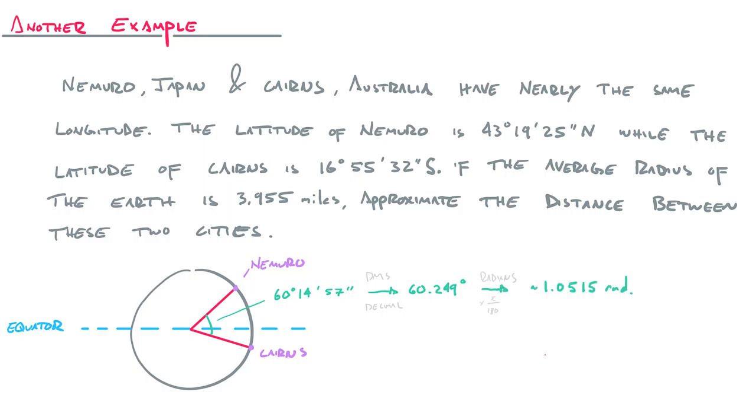And then we got to turn that thing into radians. So then you have to multiply by pi over 180. And I just kind of rounded to the nearest fourth significant figure here. We got 1.0515 radians is the central angle between these two cities.